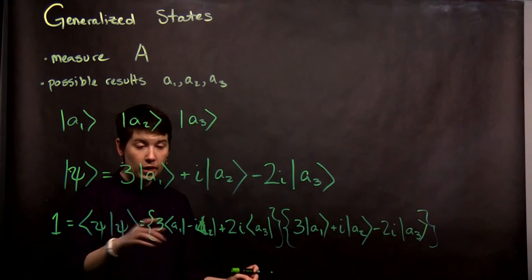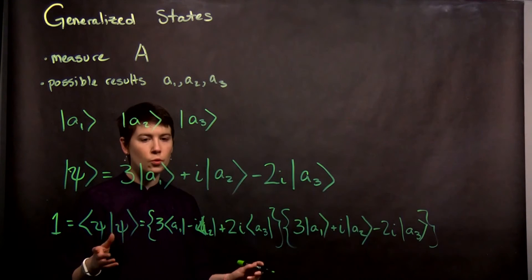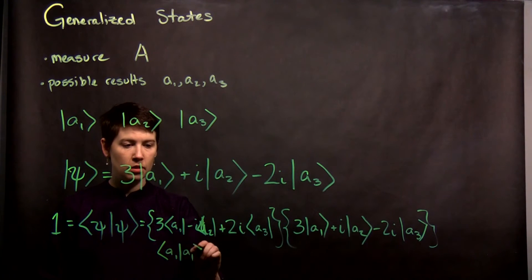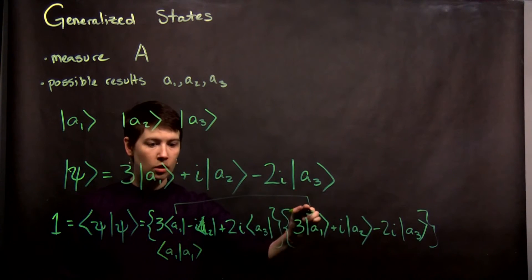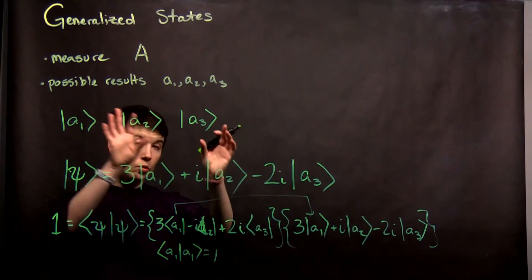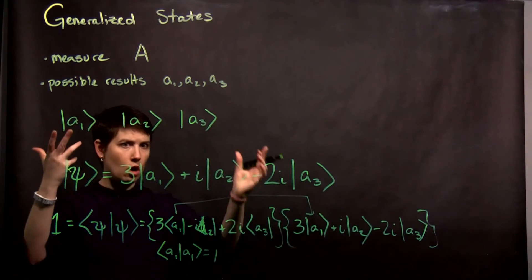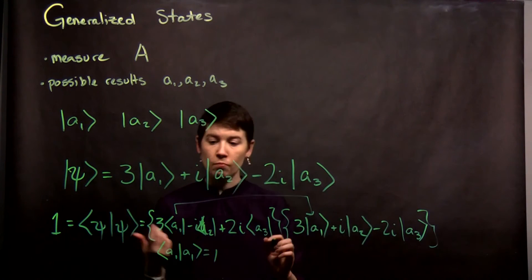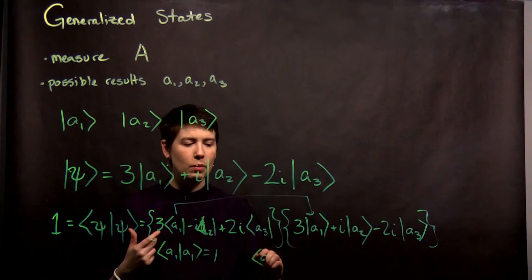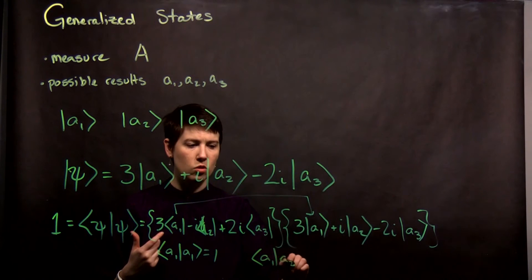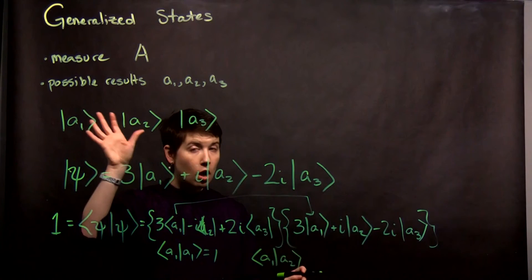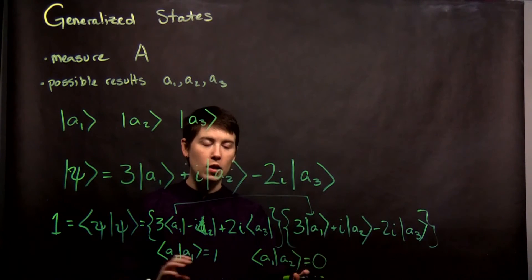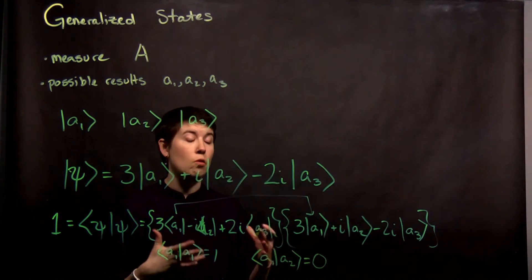Okay, so when I look at this, what do we do? A1 inner product with A1, that's going to equal 1 because we assume that these basis kets are normalized by their nature. Then A3 with A3, that's going to be 1 again. But what about A1 with A2? Again, if these are our possible states, this needs to be 0, right? Each of these basis vectors needs to be orthogonal.